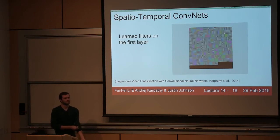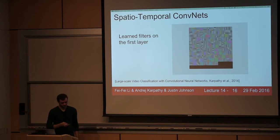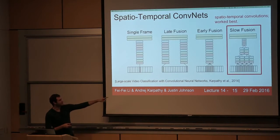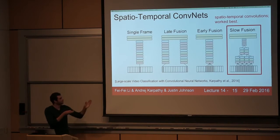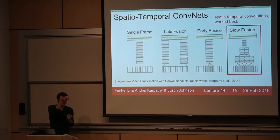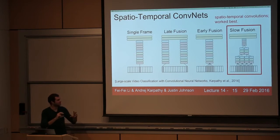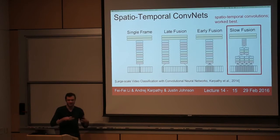Regarding output: in these cases, we're just classifying a fixed number of categories at every single frame. Now your prediction is not only a function of that single frame but also a small number of surrounding frames — maybe your prediction is actually a function of 15 frames, about half a second of video.